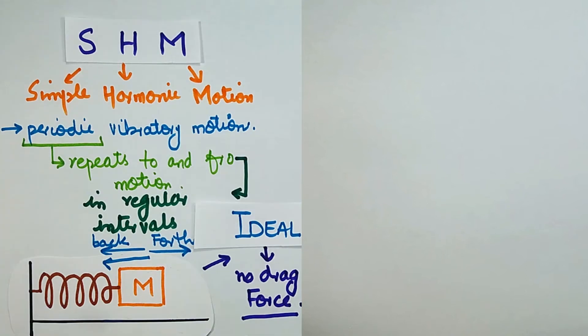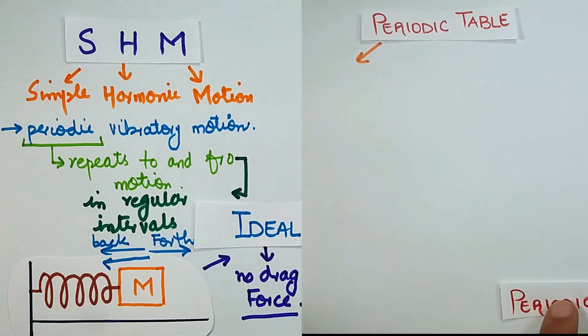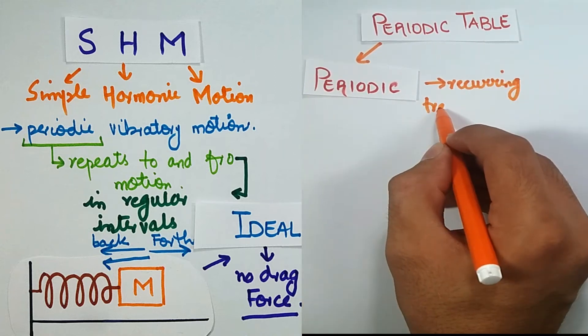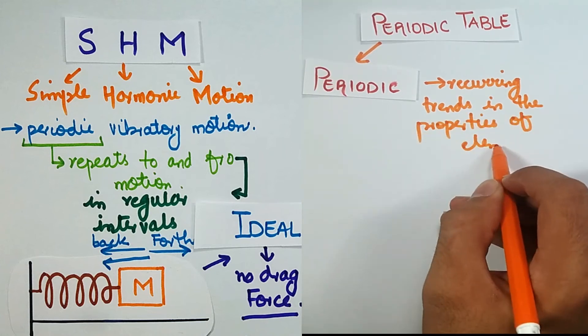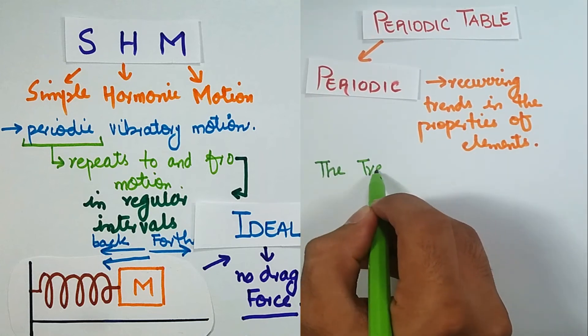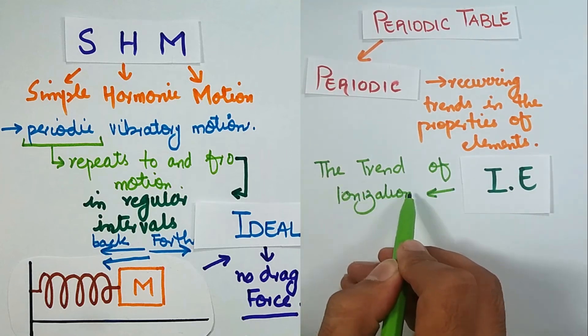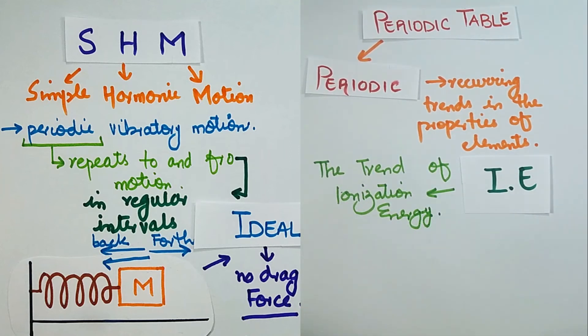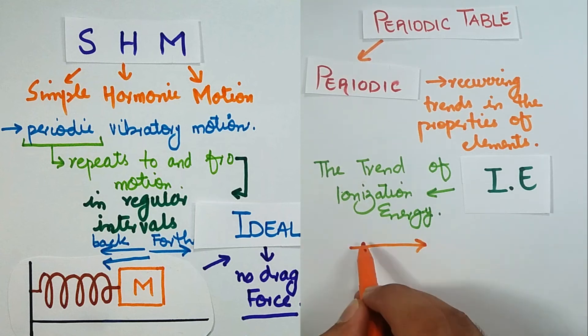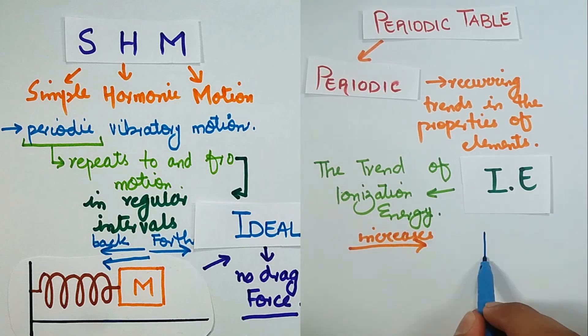The periodic table is called periodic because there is recurring trends seen in the properties of the elements. The periodic trend, like the trend of ionization energy, whose values increase from left to right in a period and decrease down the group. This trend is periodic for every period and group.